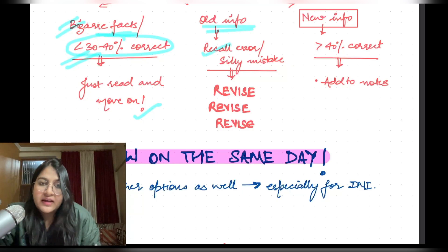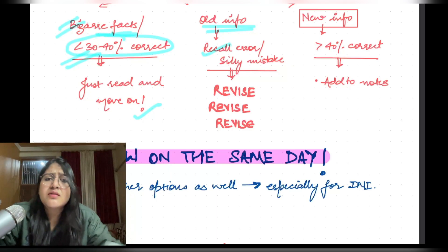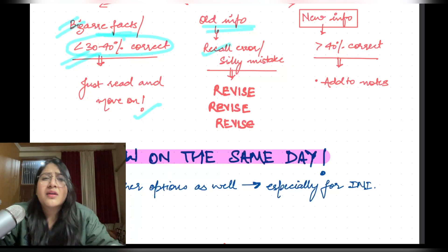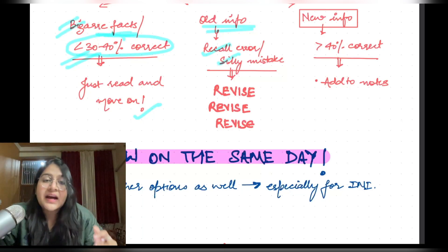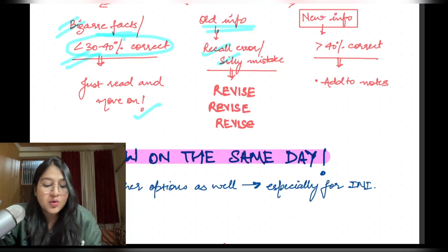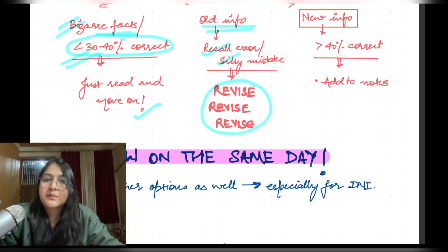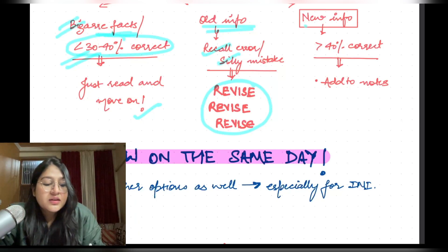Second type: old information but you made a recall error — you were not able to remember it, made a silly mistake, or did not read all the options correctly. You know the information is in your notes and memory. The only solution is to revise your notes multiple times.